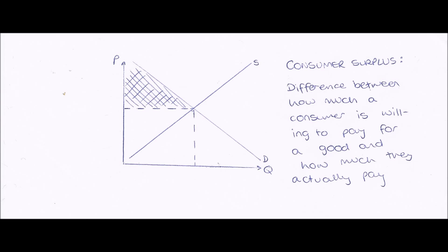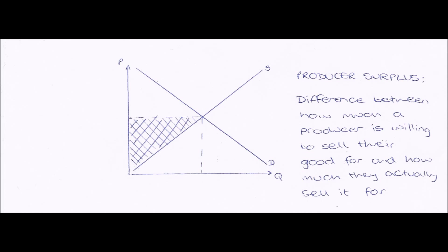The top of the demand curve is the highest price at which people are willing to pay, and the equilibrium price is how much people actually pay. So the shaded area between them represents the difference between the two, and therefore represents consumer surplus.